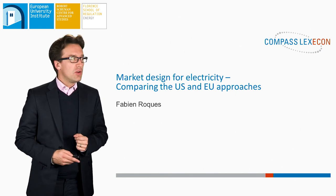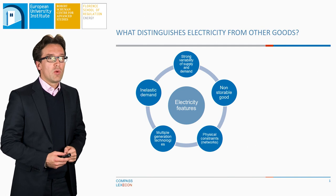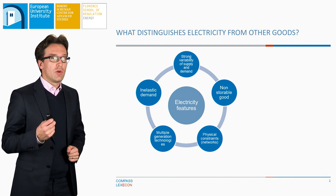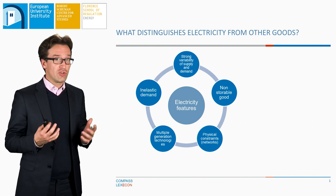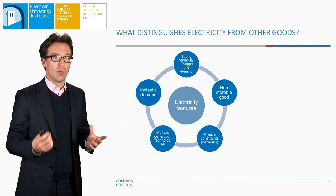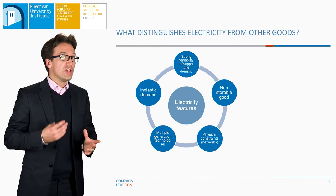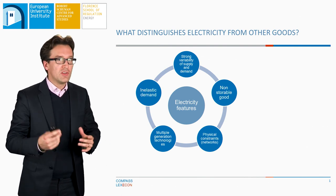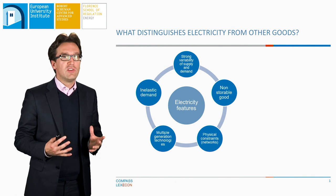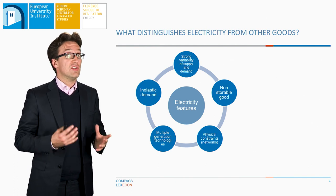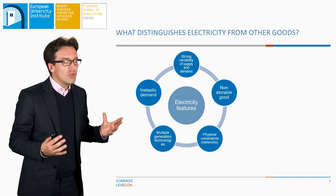If we start by looking at some of the constraints for electricity, we see that the most relevant one, the one that is often quoted first, is the fact that electricity as a good is non-storable, at least in large quantities and at an economic cost today. Of course, batteries are developing and we have had hydro storage, but largely this is a good that is difficult or expensive to store in large quantities.